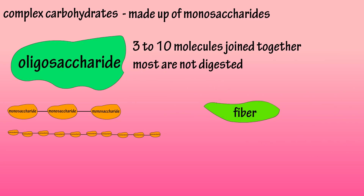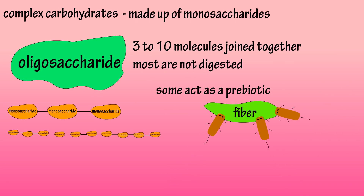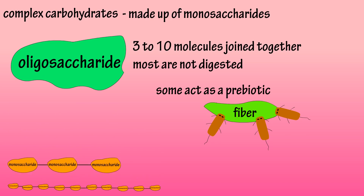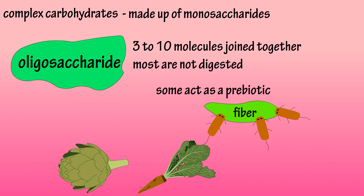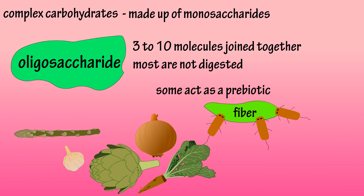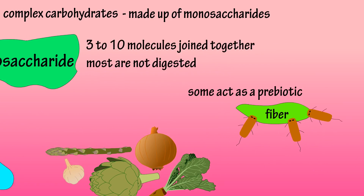Some forms of oligosaccharides act as a prebiotic, which means that they promote the growth of good gut bacteria. Foods that contain oligosaccharides include chicory root, artichokes, onions, garlic, and asparagus.